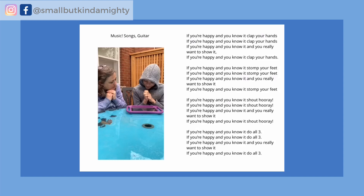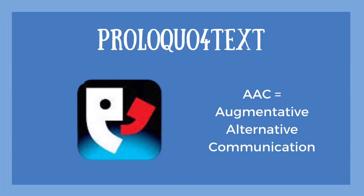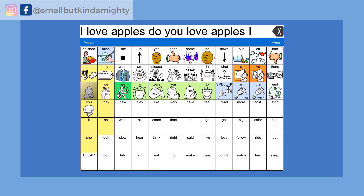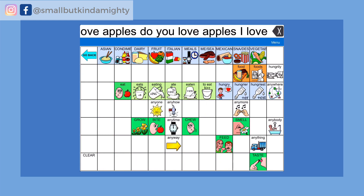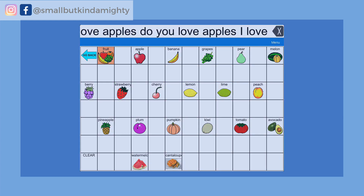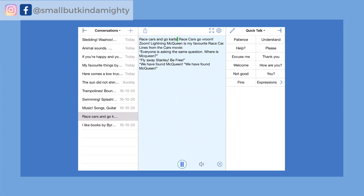Both my kids love and use Book Creator independently to put together their own stories and collections of fun things. Proloquo for Text is an AAC app. If you've seen other videos of mine, you are likely aware that Owen uses LAMP Words for Life as his primary form of AAC. For longer form writing though, because Owen loves to type, we're using Proloquo for Text, which is a text-to-speech app with some really neat features that work well with Book Creator.